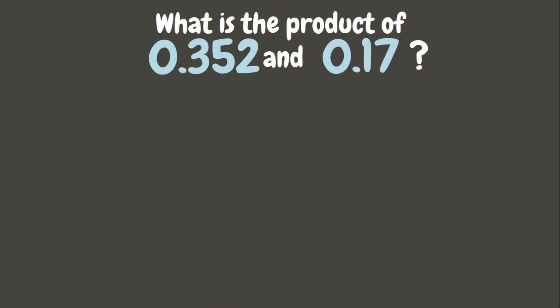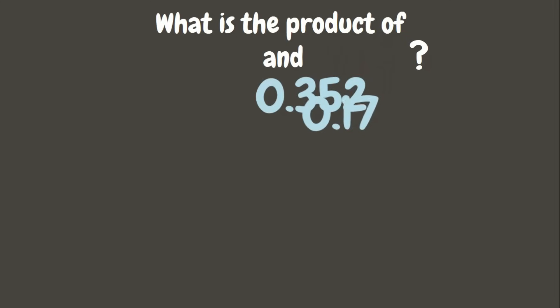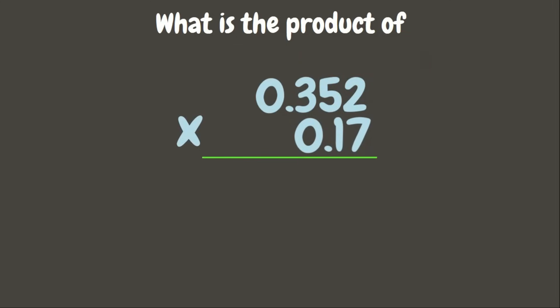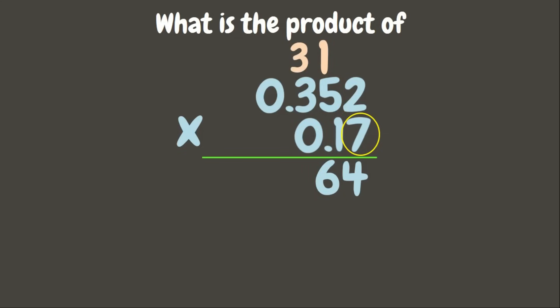Let's have another example. What is the product of 352 thousandths and 17 hundredths? When we are looking for the product, it means we need to multiply. 7 times 2 is 14, write 4, carry 1. 7 times 5 is 35 plus 1 is 36, write 6, carry 3. 7 times 3 is 21 plus 3 is 24, write 4, carry 2.